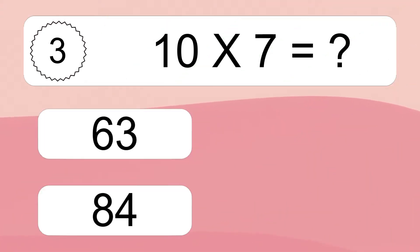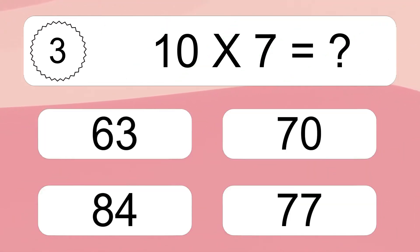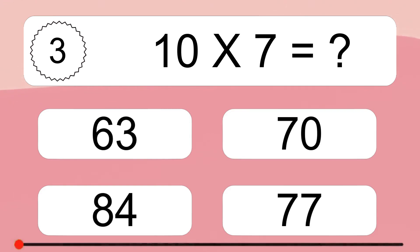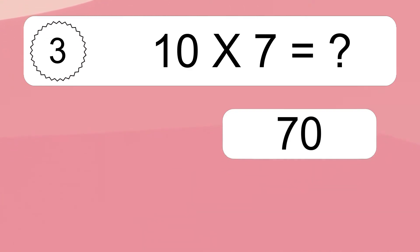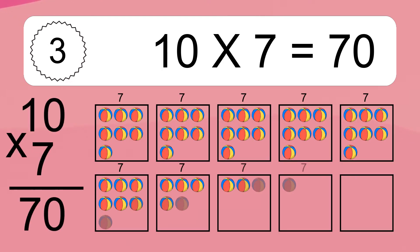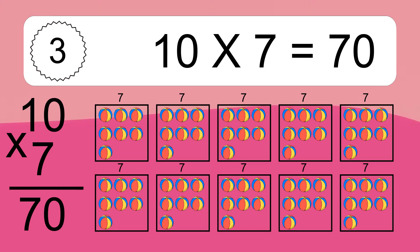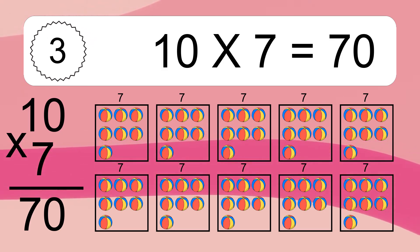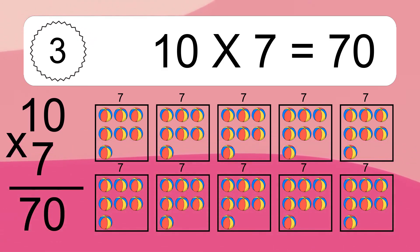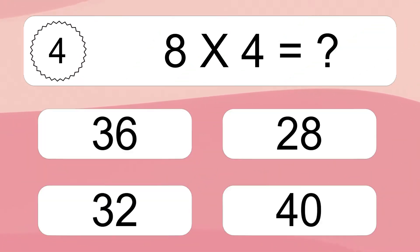10 times 7 equals what? We have 10 boxes and each box has 7 colorful balls inside. If you count all the balls in all the boxes together, you will have 10 times 7 balls. This equals 70 balls. 8 times 4 equals what?